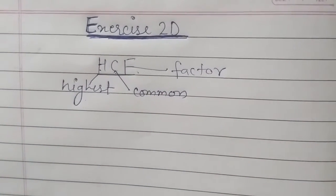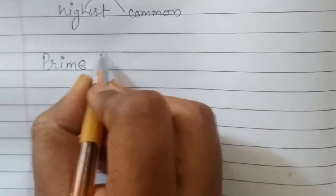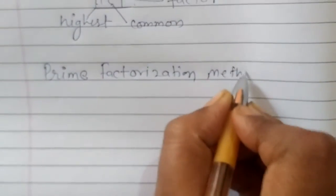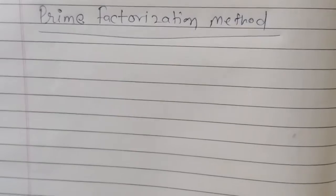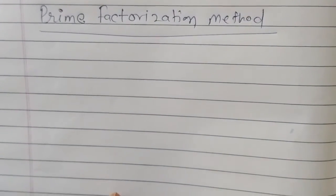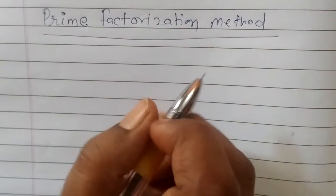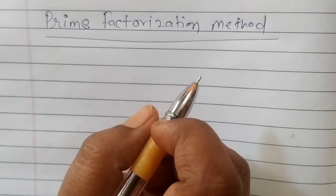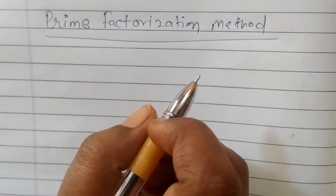Now we come to HCF by prime factorization method. First, find the prime factorization of each of the given numbers. Then the product of all common prime factors using the least power of each common prime factor is the HCF of the given numbers.